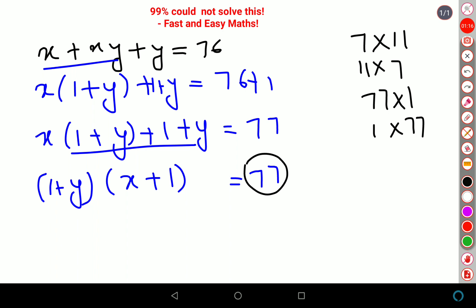If I take 1 + y equals 7, I get y as 6. And 1 + x equals 11, so I get x as 10. I'm going to put all the values over here.